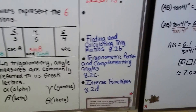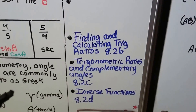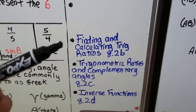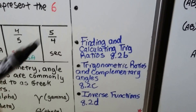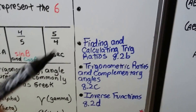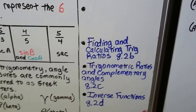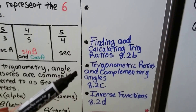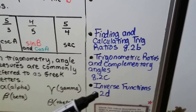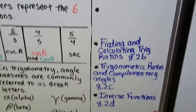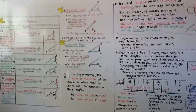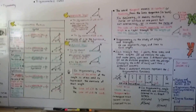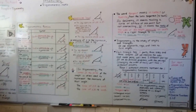Our next lesson is 8.2b — part two — where we'll be finding and calculating these trig ratios on our own with pencil and paper, and even with a calculator. Then we'll do trigonometric ratios and complementary angles, and finish with inverse functions. If you don't have a scientific calculator, you can turn your cell phone calculator sideways and you'll see the cosine, sine, and tangent buttons.